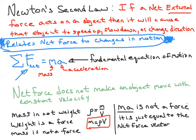If you know an object is speeding up, slowing down, or changing direction, you already know there's a net force applied to it. There's no question. The forces cannot be balanced — the only way forces are balanced is if the object is at rest or at constant velocity. If it's speeding up, you already know there's a net force in the direction it's moving.